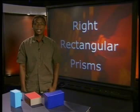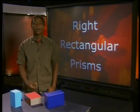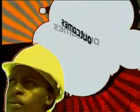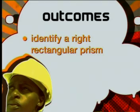In order to understand volume properly, we will work with a few other concepts that will help you in lessons to come. But by the end of this lesson, you should be able to identify a right rectangular prism. We are starting with right rectangular prisms because they are one of the easiest solids to identify and work with when learning about volume.